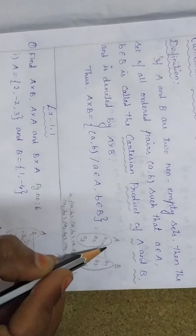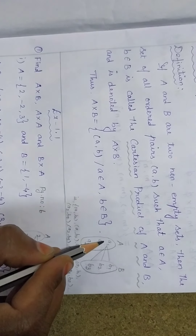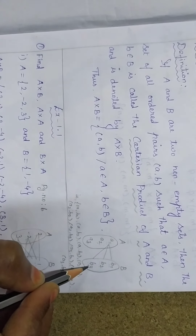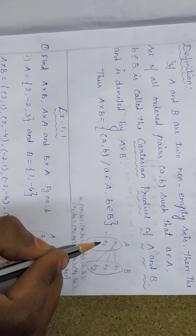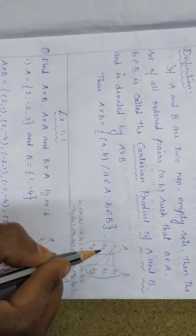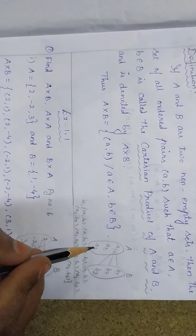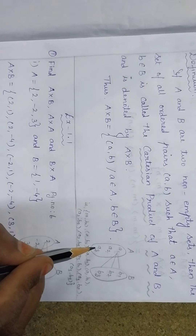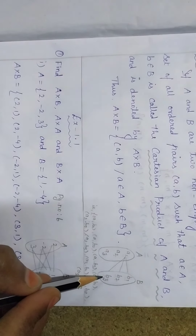In the set A, the element A1 should be paired with B1, B2, B3. Similarly, the element A2 should be paired with B1, B2, B3. Again, the element A3 should be paired with B1, B2, B3.